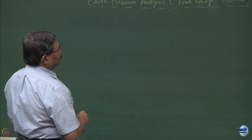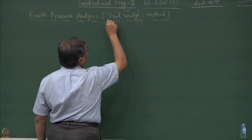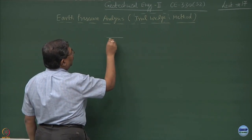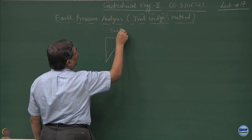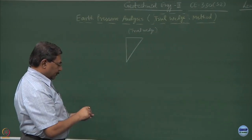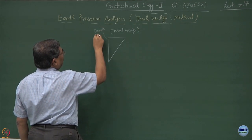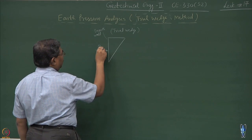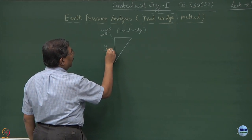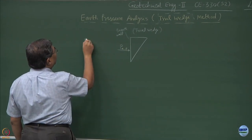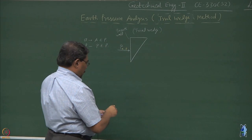In continuation with where we left in the last lecture, we were talking about earth pressure determination using a trial wedge. I had drawn the free body diagrams for this trial wedge. In most cases, the statement of the problem is that the wall is vertical and smooth. We have to find out P — this P could be active or passive. A corresponds to active earth pressure and P corresponds to passive earth pressure, with the weight of the block known.